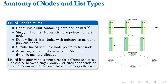Doubly-linked lists, with pointers to both next and previous nodes, offer bidirectional movement at the cost of extra memory. Circular-linked lists create a loop by connecting the last node to the first, enabling continuous cycling through elements. This is particularly useful in applications like round-robin scheduling.